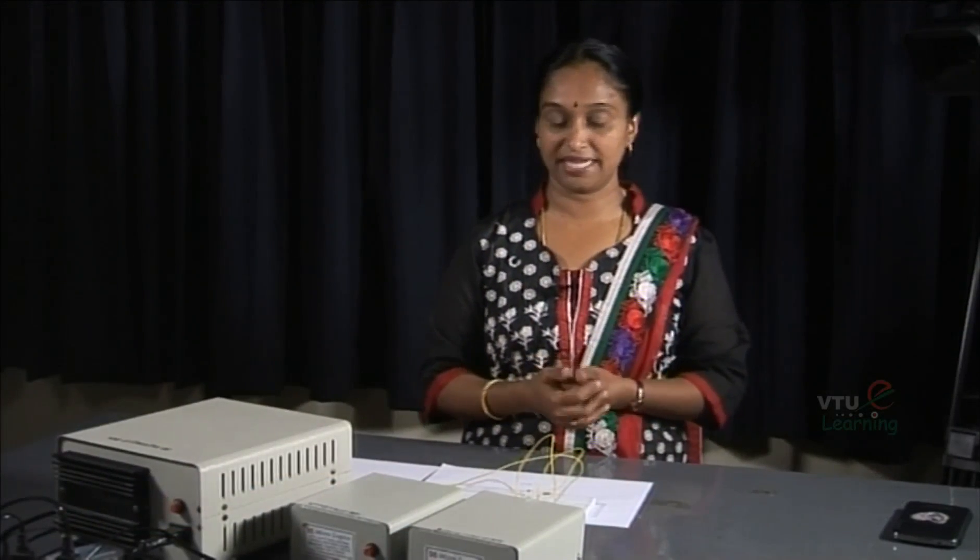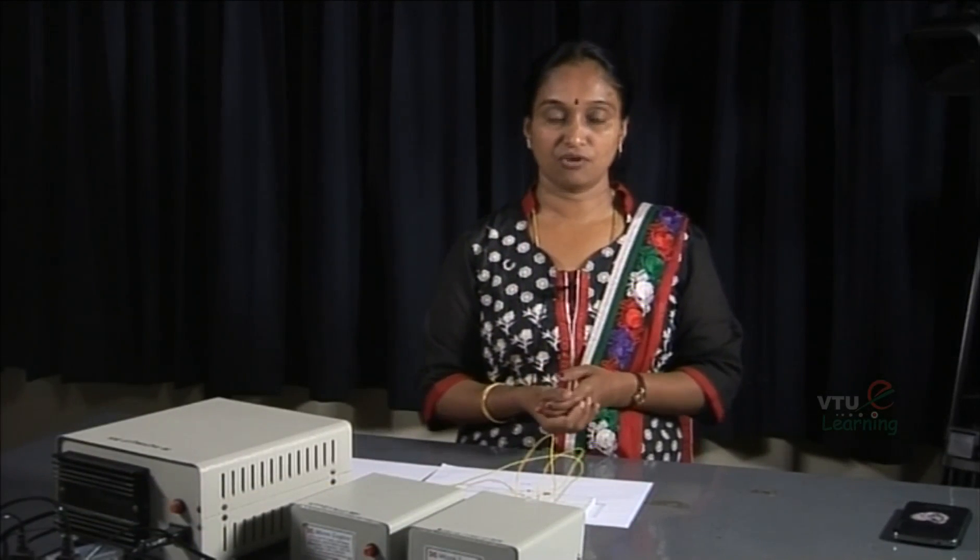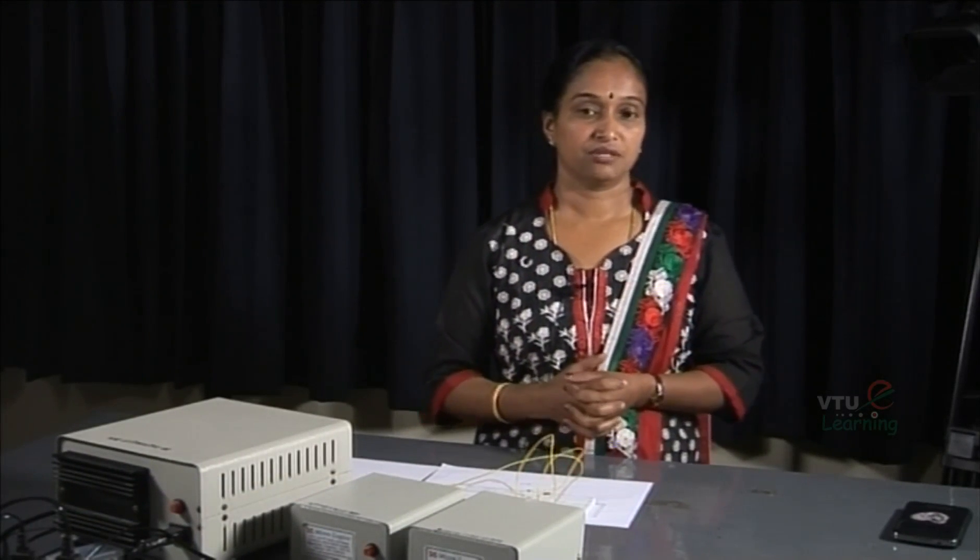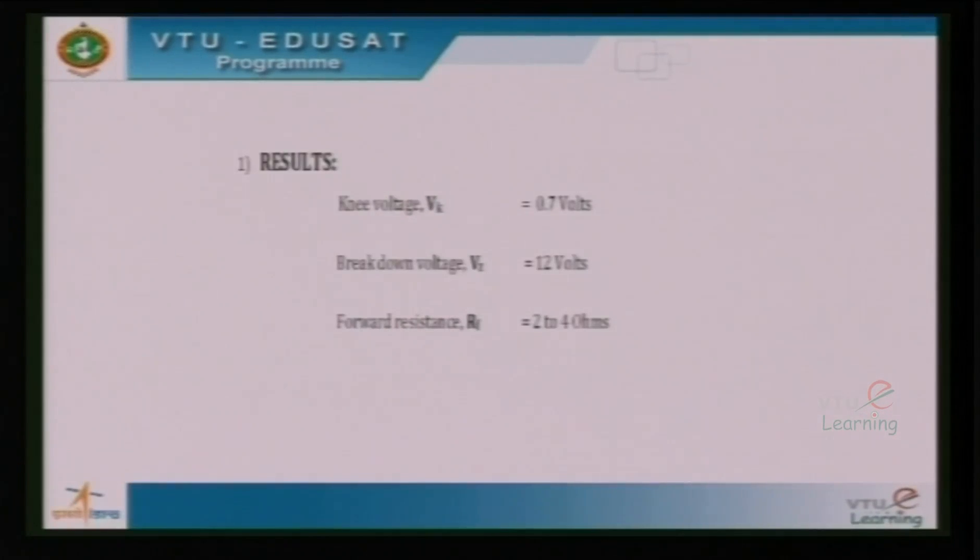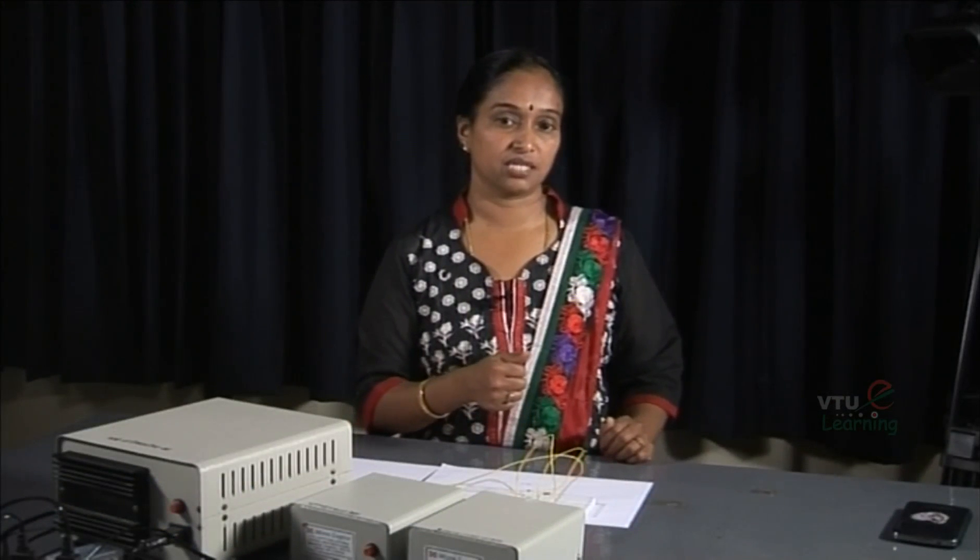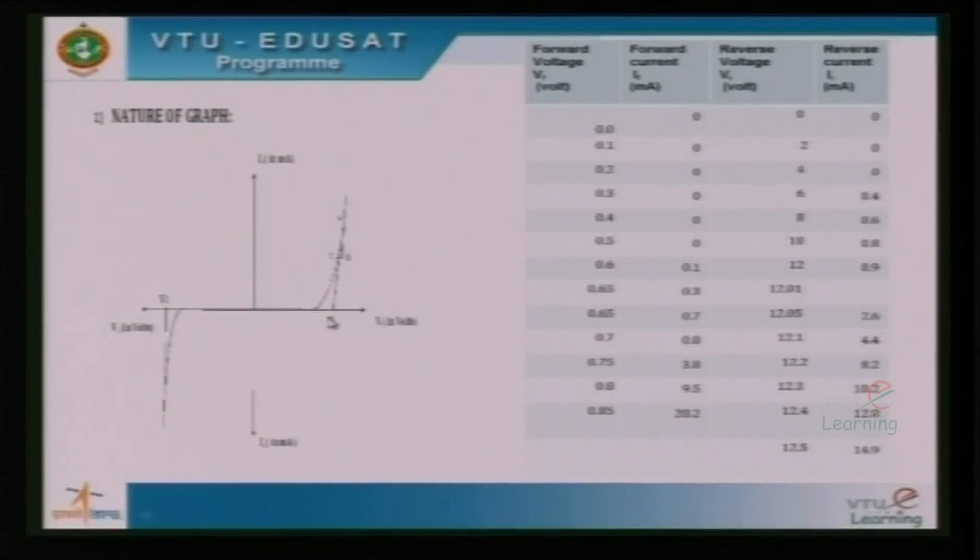From the graph, we obtain the results. The forward characteristics curve will give you the knee voltage at which the conduction in the junction starts. That is obtained by extrapolating the linear region of the curve till it meets the x-axis. The corresponding value along the x-axis is noted as knee voltage and it comes around 0.7 volts.